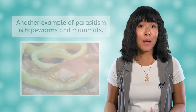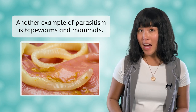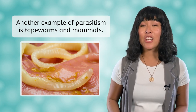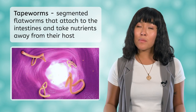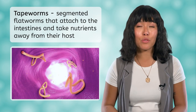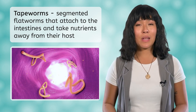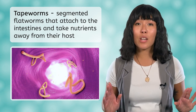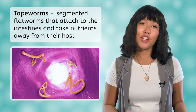Another example of parasitism is the relationship between tapeworms and mammals. Tapeworms are segmented flatworms that attach to the inside of the intestines of their hosts. These worms feed by eating the host's partially digested food, which means the host does not get their required nutrients.